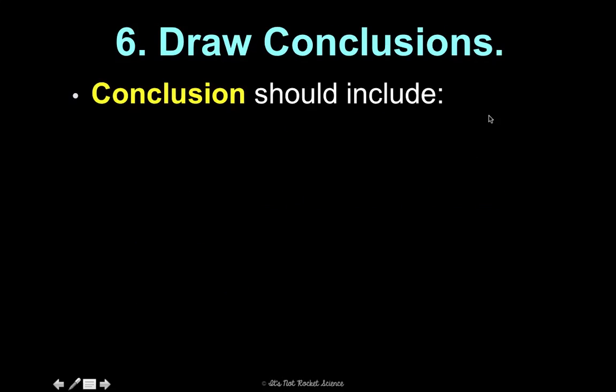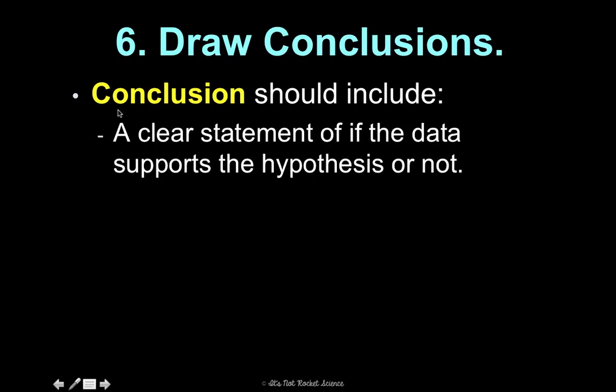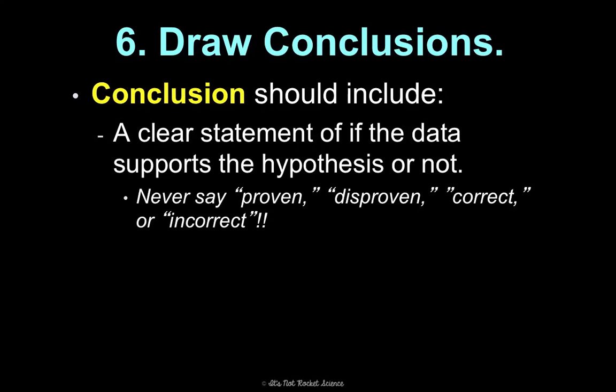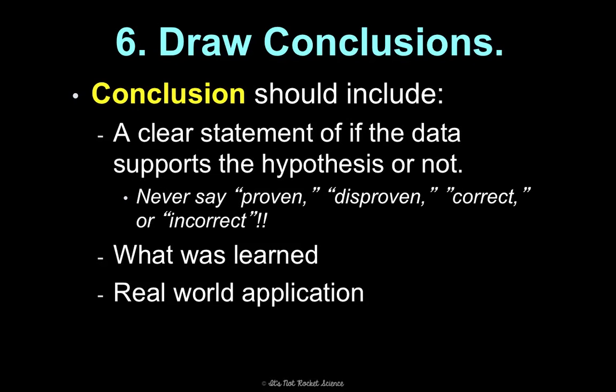And then last, you draw conclusions. So in the lab report, that's just the conclusion section. You need to include a clear statement of if the data supports your hypothesis or not. Never, ever, ever say you prove something or disprove something or you're correct or incorrect. Because this is not the end-all, be-all. This is just one experiment testing this idea one time. And your data may support it this time. And then maybe a different time, it wouldn't support your hypothesis. So we want to be really careful with the language that we use. Always tell me what you learned in the experiment. And then also apply it to the real world. Like, why is this information helpful to other people in their real life and not just something we're doing in science class for the sake of doing a lab activity?